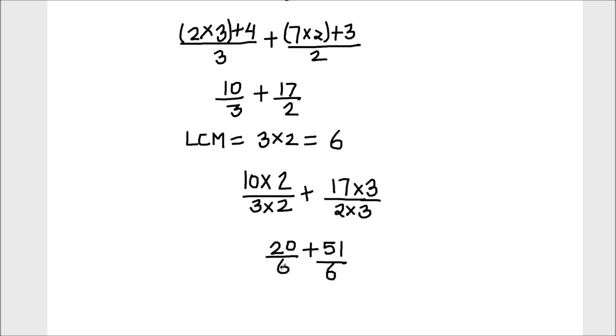Now we have 2 like fractions with same denominators. We can add the numerators directly. So this is going to be 20 plus 51, which is equal to 71. 71 by 6, or 71 upon 6, is the final answer.